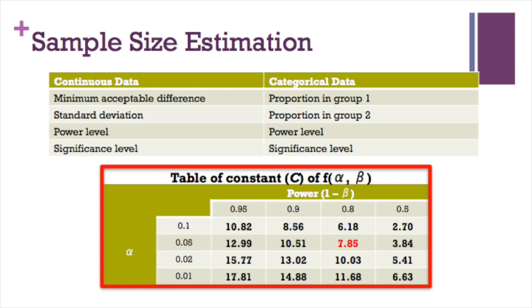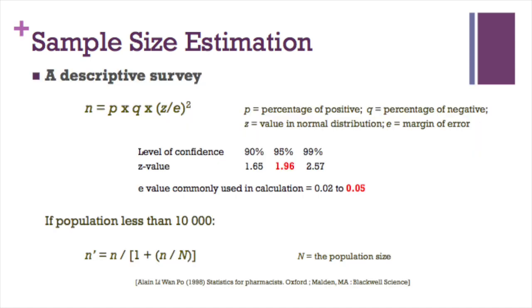The following is specific equations for various study designs. For a descriptive survey, we need to know p, that is the percentage of positive, and q, the percentage of negative. Z value at 95 confidence level is 1.96. Margin of error or e value is commonly set at 0.05. If the total population is less than ten thousand, a discounted estimation can be utilized.